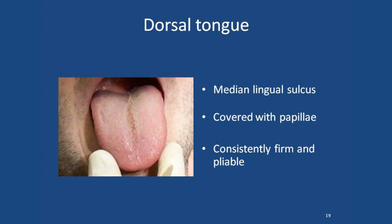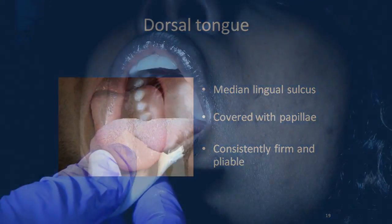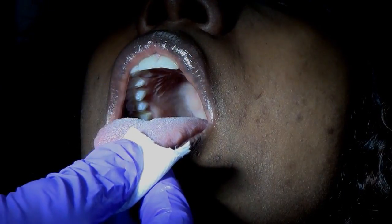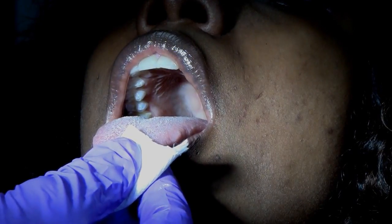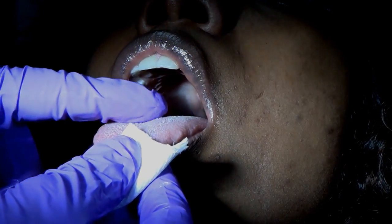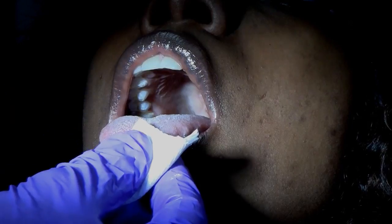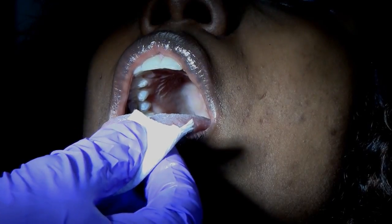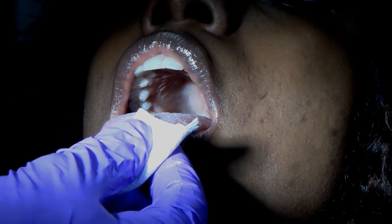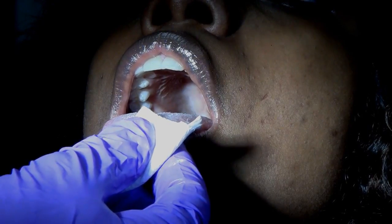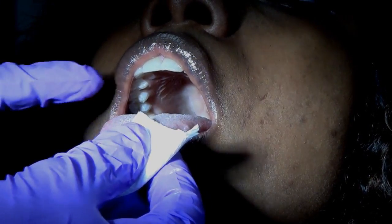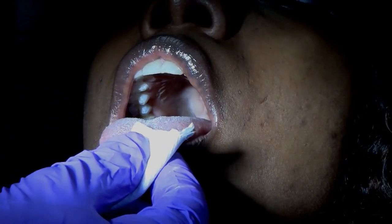A very common finding, especially in smokers, is where the filiform papillae right in the middle of the tongue elongate and don't desquamate the way they normally should, picking up staining from smoking, giving a whitish, tan, or brownish appearance — what we call hairy tongue.